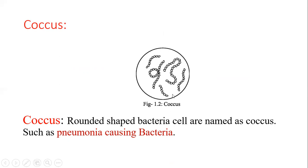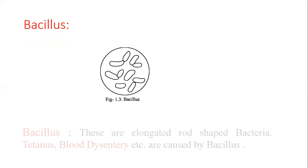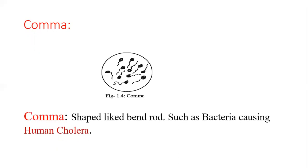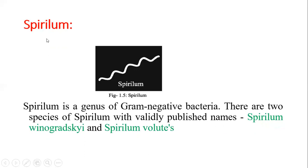Next, Bacillus — these are elongated, rod-shaped bacteria. Tetanus, blood dysentery etc. are caused by Bacillus. Next, comma-shaped bacteria — like a bent rod — the bacteria causing human cholera. Number four, Spirellum — Spirellum is a genus of gram-negative bacteria. Two species with published names are Spirellum minus and Spirellum volutans.